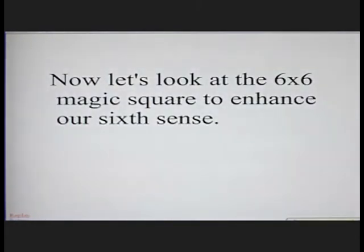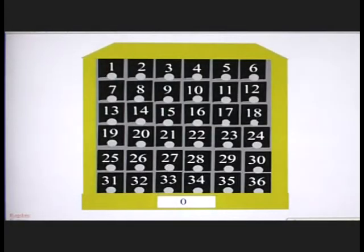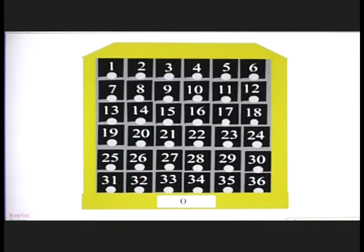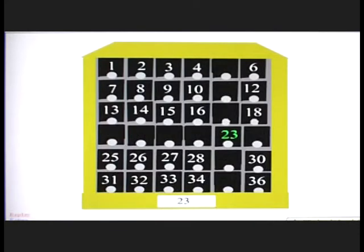Now let's look at the 6 by 6 magic square to enhance our sixth sense. We begin by pushing button number 23, eliminating certain rows and columns. Then we push 6, which gives us a total of 29.